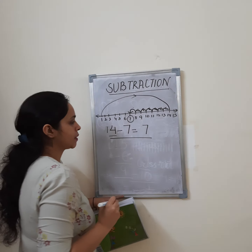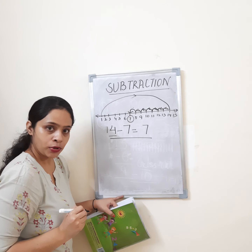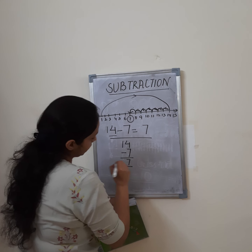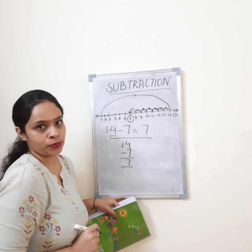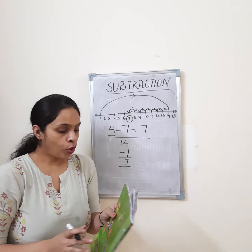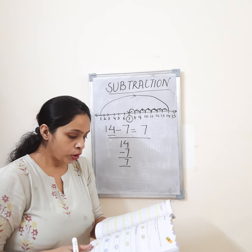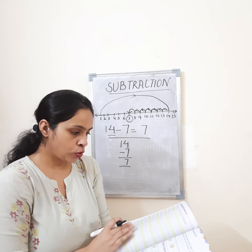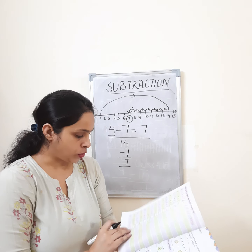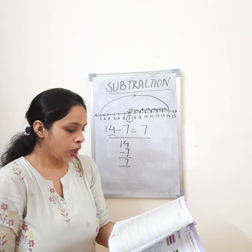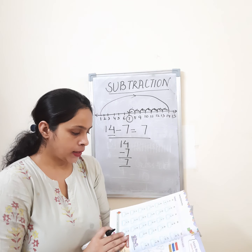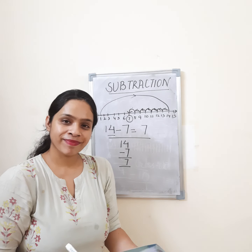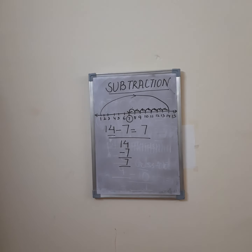When we write subtraction like this in a line, it is called horizontal subtraction. And when we write 14 minus 7 equal to 7 in a column format — top and bottom — it is called vertical subtraction. All this is about subtraction from your book. You will do the subtraction pages — page numbers 63, 64, and 65 — and send them on the group. Thank you.